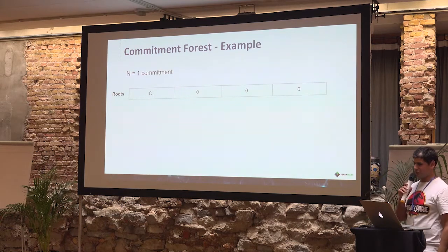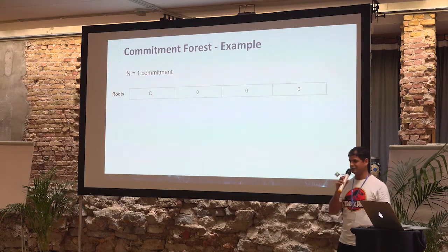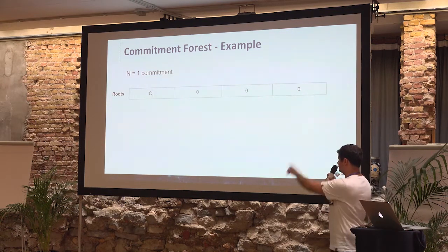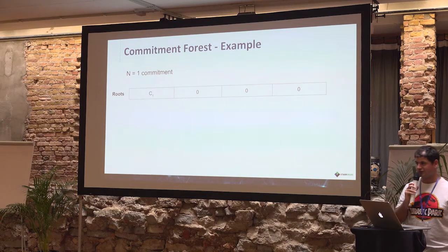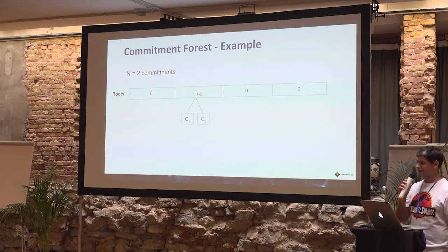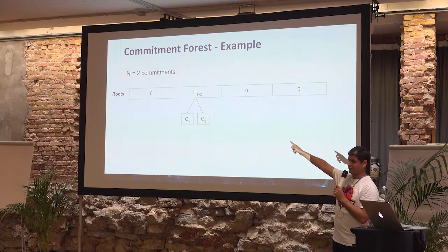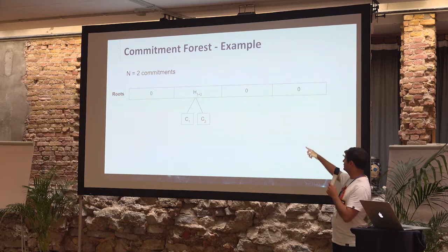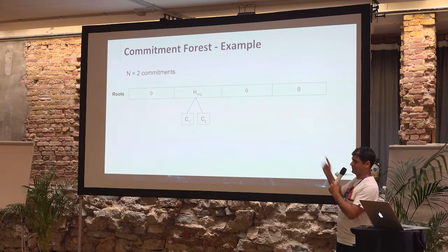The way commitment forest can work is the following. The contract only keeps in storage the roots. When the contract gets the first commitment, it stores it as a root. When it gets the second commitment, it creates a larger Merkle tree and stores just the root — it doesn't remember C1 and C2 separately, just the combined root.